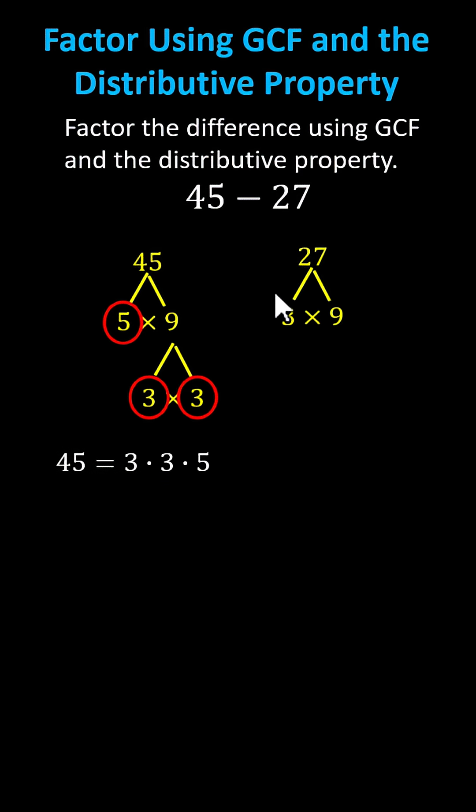And now for 27, let's begin with 3 times 9, where 3 is prime. And 9 equals 3 times 3, where again 3 is prime. The prime factorization of 27 is 3 times 3 times 3.